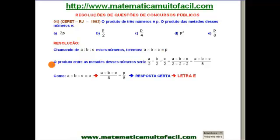E ele quer saber o seguinte, o produto entre as metades desse número será, veja bem, a metade de A será A sobre 2, a metade de B, B sobre 2 e a metade de C, C sobre 2. Vamos multiplicar isso aqui?